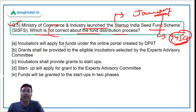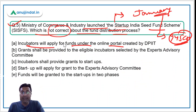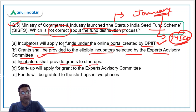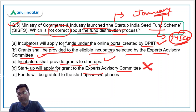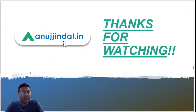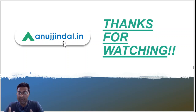For question 5, the incorrect statement is option D — 'startups will apply for grants to the Experts Advisory Committee' — because startups do not apply directly; grants are provided to them by the incubators. Option D is the correct answer. That concludes today's session. If you have any doubts, ask in the comment section. Thank you for watching, goodbye, take care and God bless you.